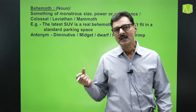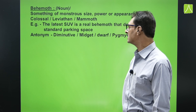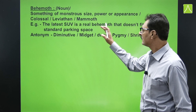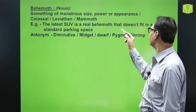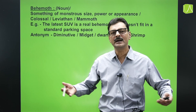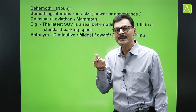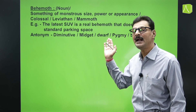Now some unfamiliar words — perhaps some students are reading these for the first time. 'Behemoth' is a noun meaning something of monstrous or huge size — vishal. Synonyms include colossal, gigantic, and leviathan. Example: 'The latest SUV is a real behemoth that does not fit in a standard parking space.' Antonyms are diminutive, tiny, midget, dwarf, and pygmy.